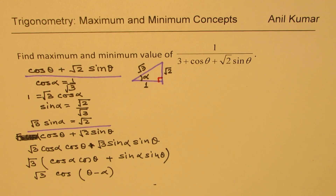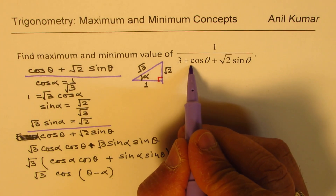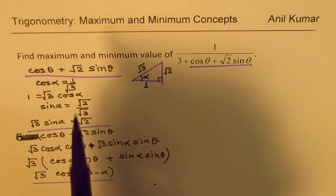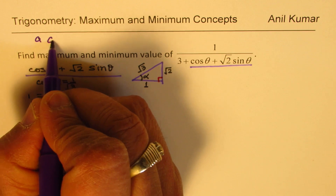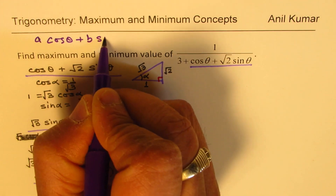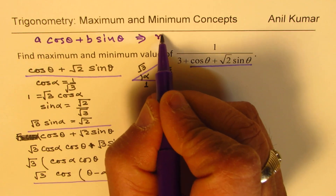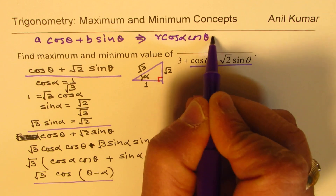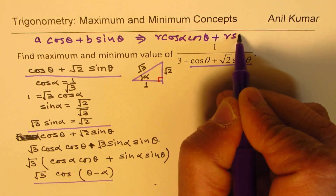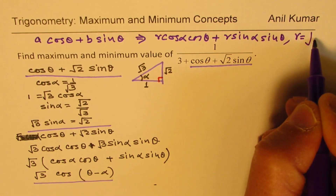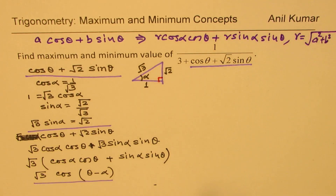That is how we rewrite the two terms in the denominator. The general concept is: if you are given a cos θ + b sin θ, we can always write this as r cos α · cos θ + r sin α · sin θ, where r = √(a² + b²). The r value could be both positive and negative.